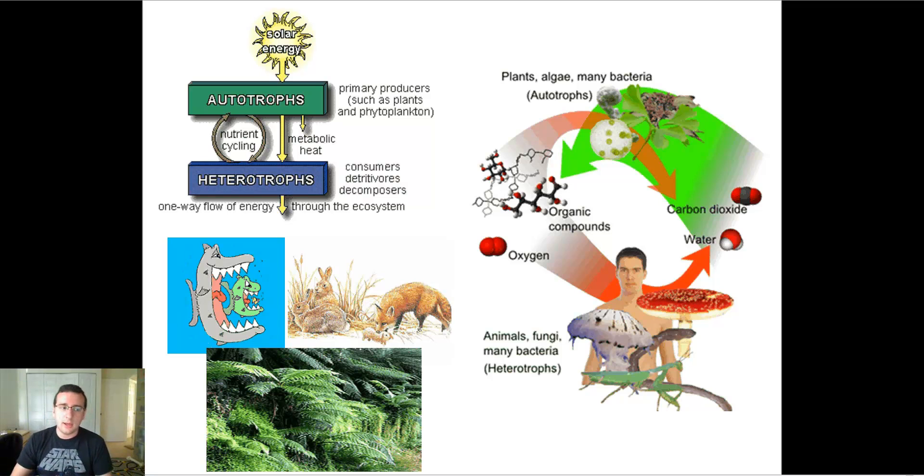And then the consumers also called heterotrophs. Hetero means different. Just like in heterosexual, you like someone of a different sex. So heterotroph means different eat. I must eat someone different than me in order to actually survive.